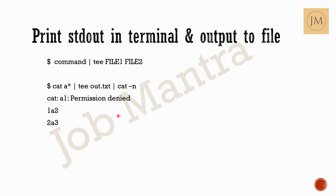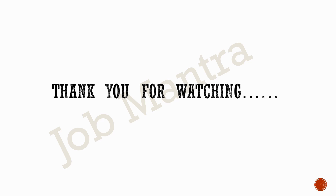The output will show the standard error message for a1, followed by lines 1 and 2 for the contents of a2 and a3 with line numbers added. The file out.txt contains the standard output from the tee command. By default, the tee command overwrites the file, but it can also be used with an append option. That covers today's video — please subscribe to the channel and share it. Thank you!